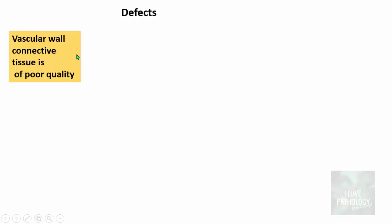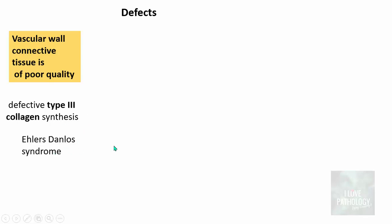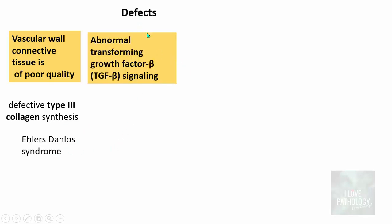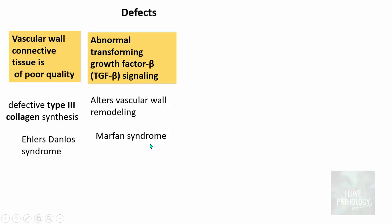The first defect is that the vascular wall connective tissue itself is of poor quality. This happens whenever there is defective type 3 collagen synthesis — for example, in Ehlers-Danlos syndrome. The second defect is abnormal transforming growth factor beta (TGF-β) signaling, which alters vascular wall remodeling. This is often found in cases of Marfan syndrome.